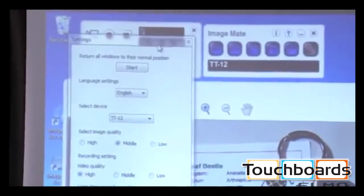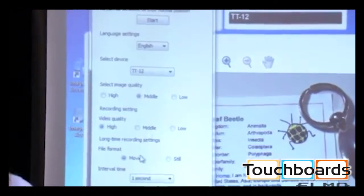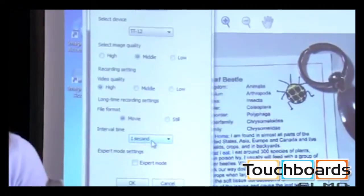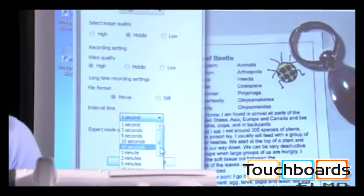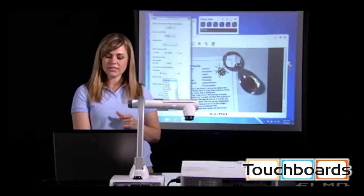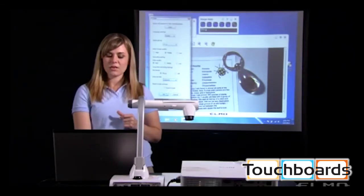And down at the bottom, you can choose your interval time. So you can have the document camera take a picture every second, every three seconds, every five seconds, up to 24 hours. You'll press OK.